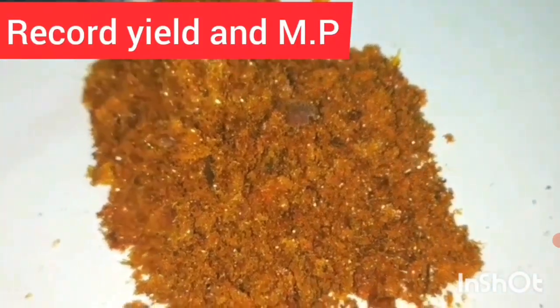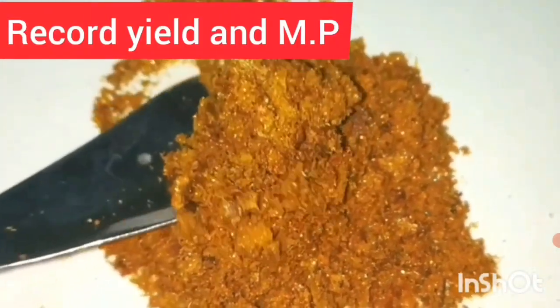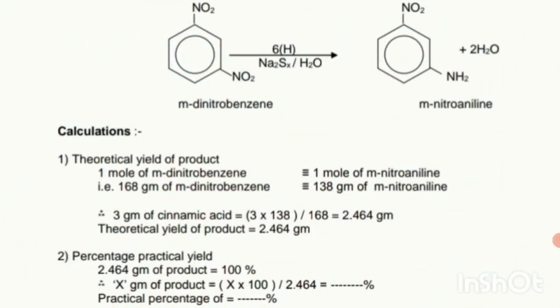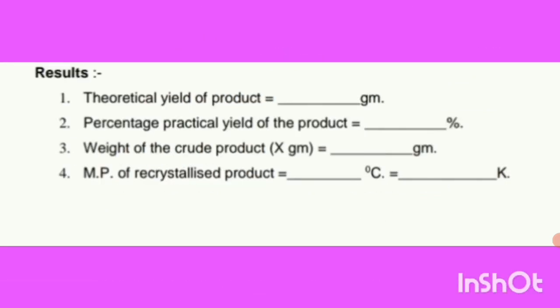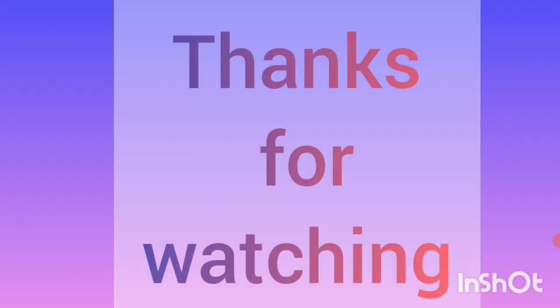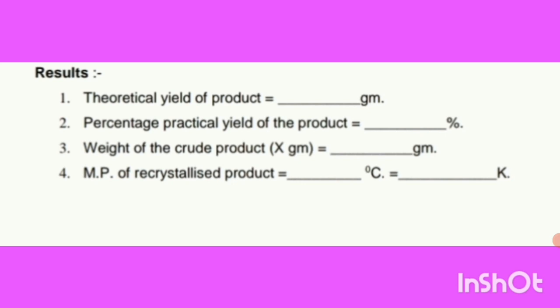Record the yield and melting point of the product. Using the formula — 1 mol of M-dinitrobenzene equals 1 mol of M-nitroaniline — calculate the theoretical yield. Record the theoretical yield, practical yield, and melting point.